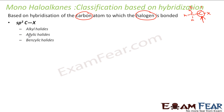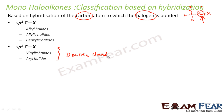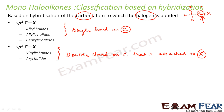If carbon 1 is sp3 hybridized, the halide is either an alkyl halide, allylic halide, or benzylic halide. If carbon 1 is sp2 hybridized, it is either a vinyl halide or an aryl halide. So for sp2, there must be a double bond on the carbon that is attached to the halogen.